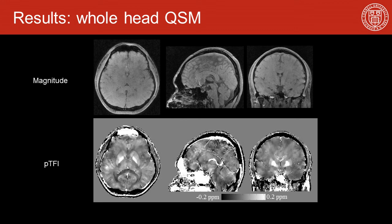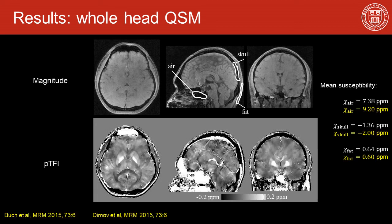Since preconditioned total field inversion can estimate susceptibility over the entire field of view, it enables QSM for the entire head, whose susceptibility ranges from 0.1 ppm for soft tissue to about 9 ppm of air inside the sinuses. Here it shows the magnitude and whole-head QSM for a healthy subject; measurements of susceptibility within air, skull, and fat are consistent with values reported in the literature.